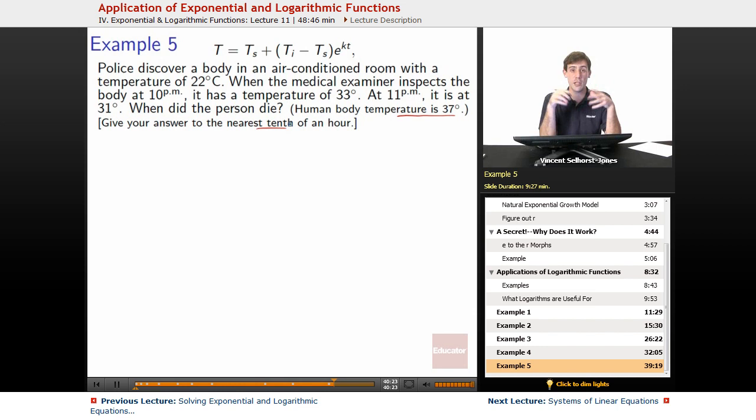That will tell us when the person died, so this is forensic science. This is the sort of information, sort of math, that crime scene investigators can use to figure out when did a person die and be able to create a good murder case based on that.